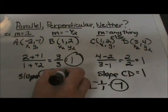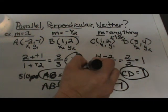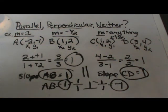But we can see AB and CD are both positive 1, therefore those two lines are parallel. I hope this video was helpful.